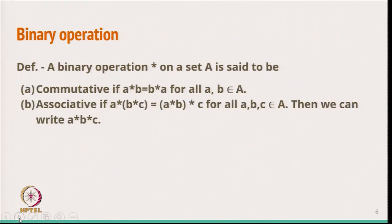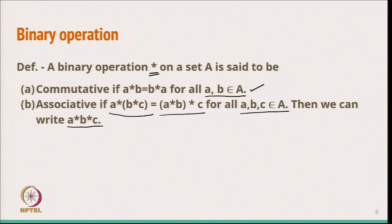A binary operation represented by star on a set A is said to be commutative if A star B equals B star A for all elements A, B belonging to the set A. Another property is associativity: the binary operation star is said to be associative if A star (B star C) equals (A star B) star C, meaning we can place the bracket anywhere among A, B, C. If this is true for all values of A, B, C, then the binary operation is associative.